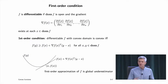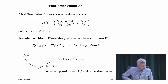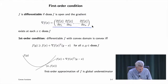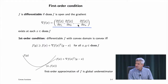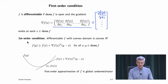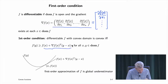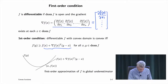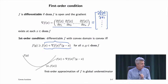Now we get to first-order conditions for convexity. If f is differentiable — meaning its domain is open and it has a gradient with all partial derivatives existing — then here's what the result is. The gradient notation (partial f / partial x_1, ..., partial f / partial x_n) is a column vector.